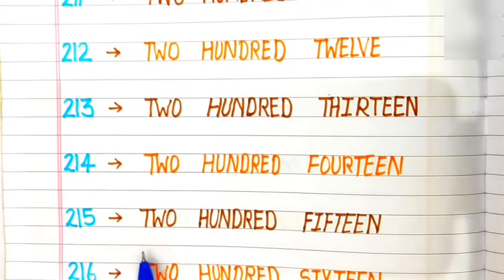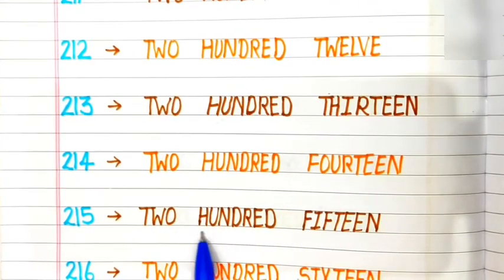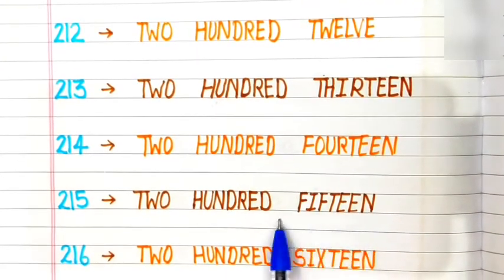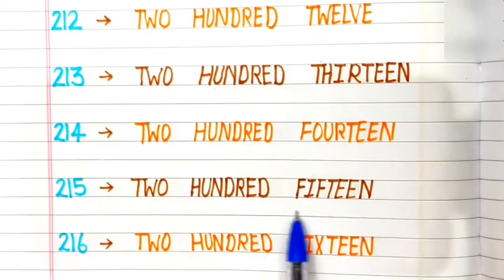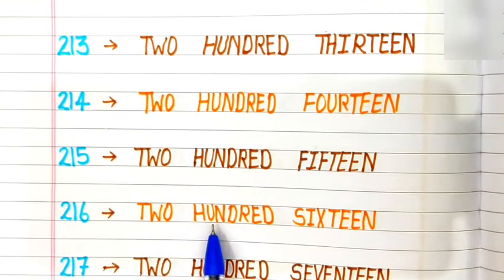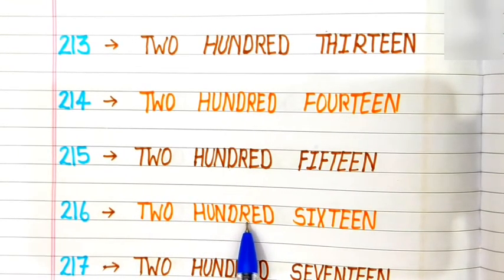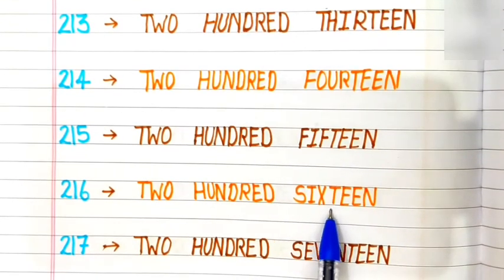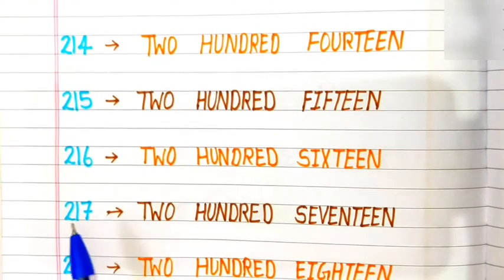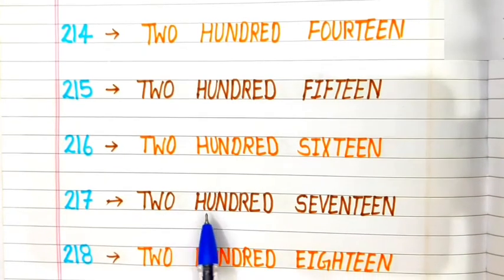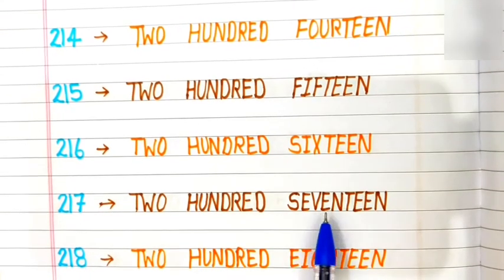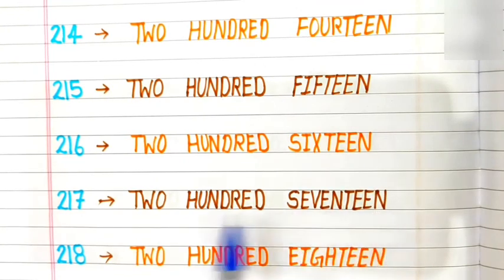215: T-W-O H-U-N-D-R-E-D F-I-F-T-E-E-N. 215. 216: T-W-O H-U-N-D-R-E-D S-I-X-T-E-E-N. 216. 217: T-W-O H-U-N-D-R-E-D S-E-V-E-N-T-E-E-N. 217.